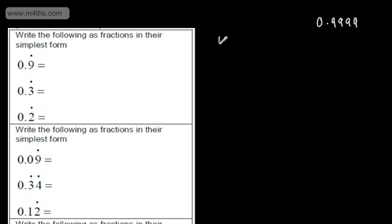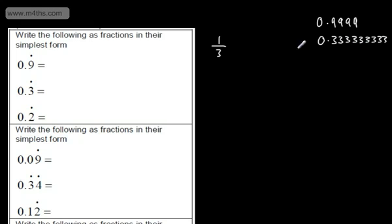The answer is going to be 1 third. So if you know 0.3 recurring — remember, 0.3 recurring is 0.333 and so on — this will just keep going. Anytime you're finished, add another 3 on, keep going and it will still continue. What we're going to do is look at a method in which we convert this into 1 third.